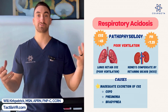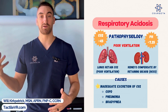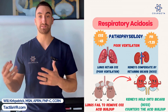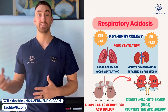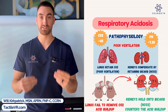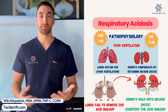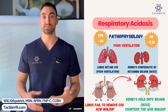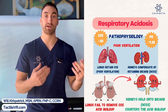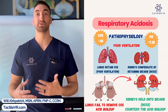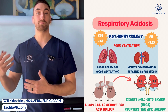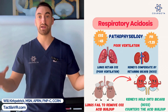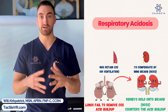If our lungs aren't working, the body also uses the kidneys as a buffer system for acid-base balance. The kidneys control bicarb, which is HCO3. Bicarb is alkaline — the opposite of acidic. So what the kidneys do to compensate for respiratory acidosis is hold on to more bicarb, compensating for the excess acidity and trying to keep the pH at a balanced level.